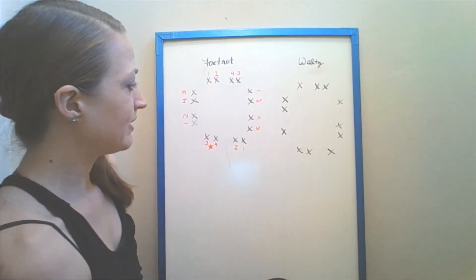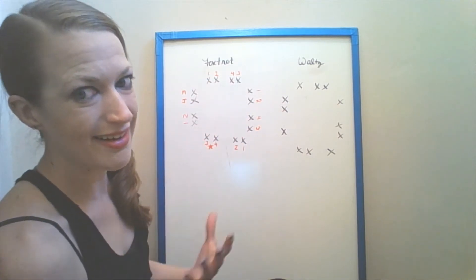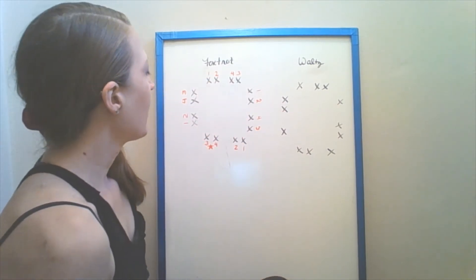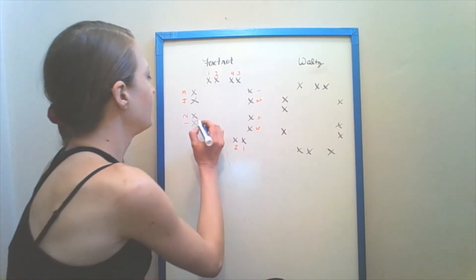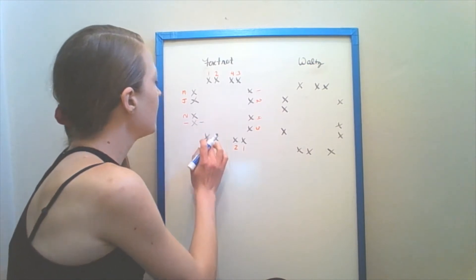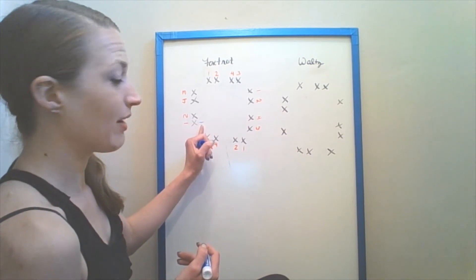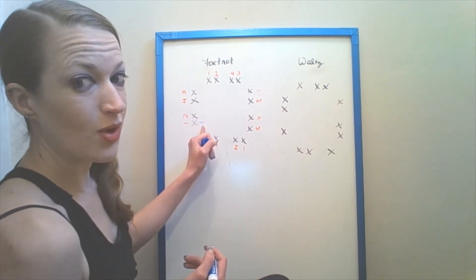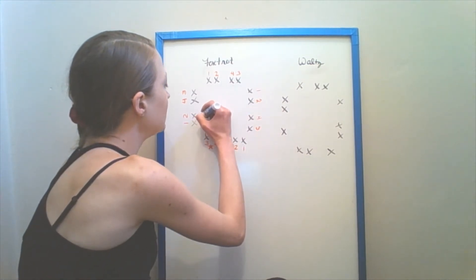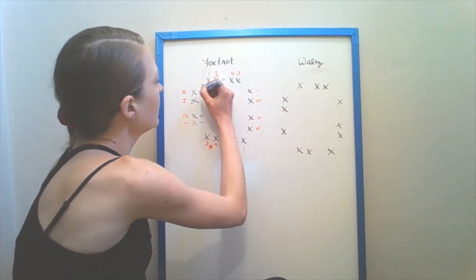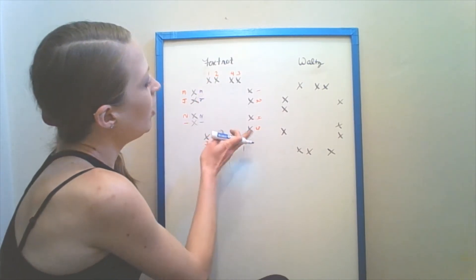From a follower's perspective, you would be doing this together, so you would be moving in a box together. We would step backwards here with our right foot on one. Now because of how we're moving, we'll be facing backwards, so we'll be facing this wall over here. We step together on two, just like our partner. We step side three, and we're together on four, all facing this wall.